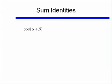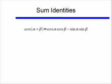Now that we found the sum identity for sine, let's look at it for cosine. If I have cosine of alpha plus beta, that's equal to cosine alpha times cosine beta, minus sine alpha times sine beta. Notice that when we had sine of alpha plus beta, we ended up adding the two terms, but for cosine of alpha plus beta, we subtract — cosine alpha cosine beta minus sine alpha sine beta. That's an important difference.